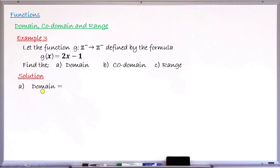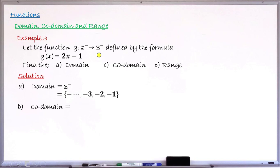Starting with the domain: the domain is your very first set, which is the set of negative integers Z⁻. The elements are from minus infinity up to minus 3, minus 2, minus 1 — so minus 1 is the largest number there. Moving to question (b), codomain: codomain is always your second set, which is also a set of negative integers Z⁻ — the same set from minus infinity up to minus 3, minus 2, minus 1.